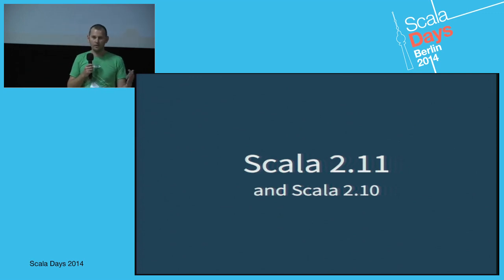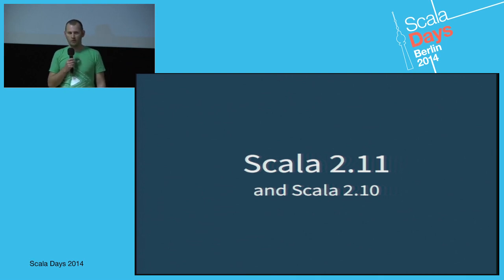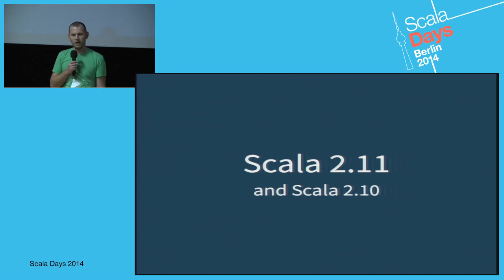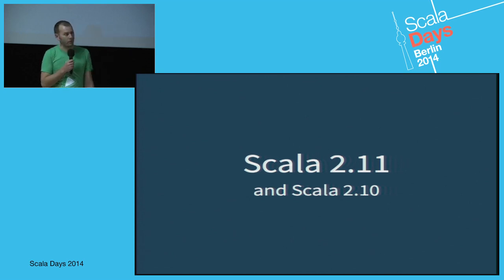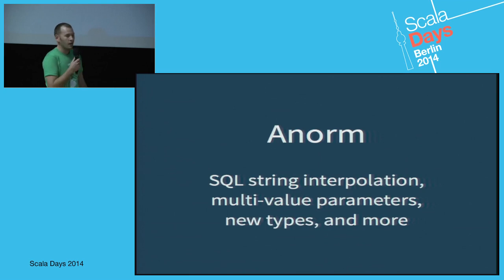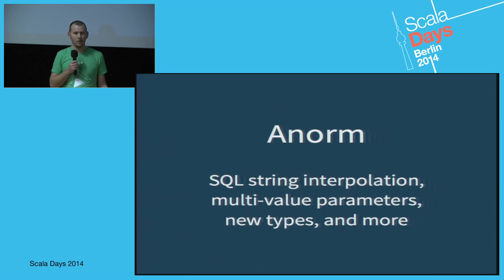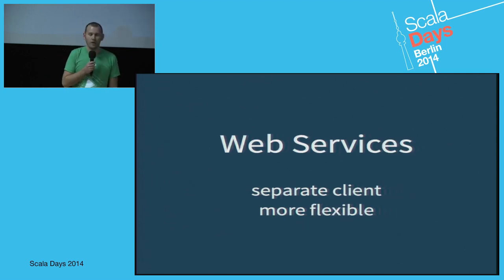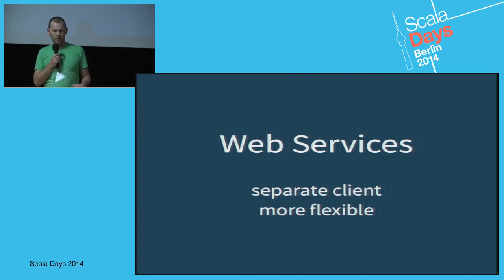Previously Play was tied to one particular Scala version. Play 2.3 is the first Play release where we cross-compile against Scala 2.11 and 2.10, so you can now just put it in your build and it will work. Everything's cross-compiled, including the modular libraries like Twirl. Anorm has been receiving a lot of improvements — Cedric, one of the new core committers, has been working on this. Web Services has also seen a lot of improvements: it's now pluggable, you can have multiple clients, and it's a lot more configurable. Will Sargent from Professional Services at TypeSafe has been doing that work.